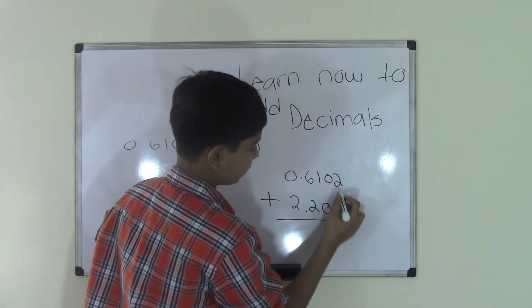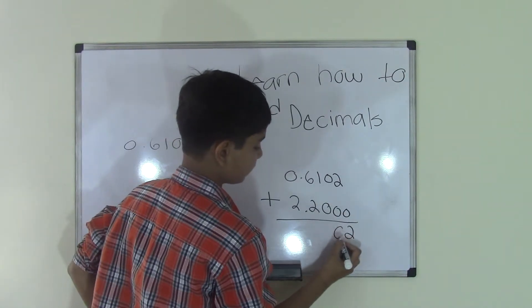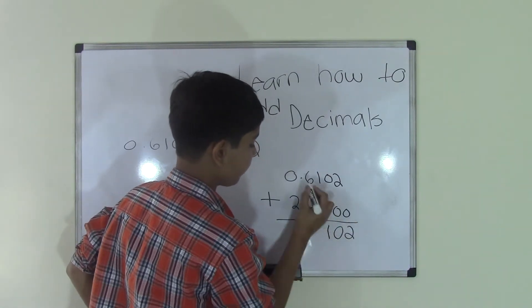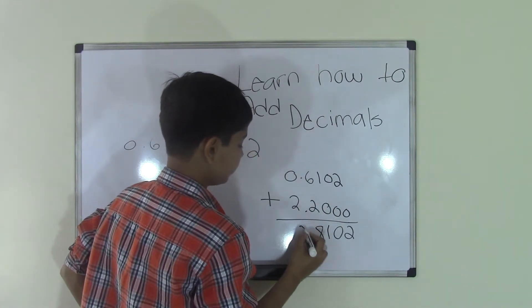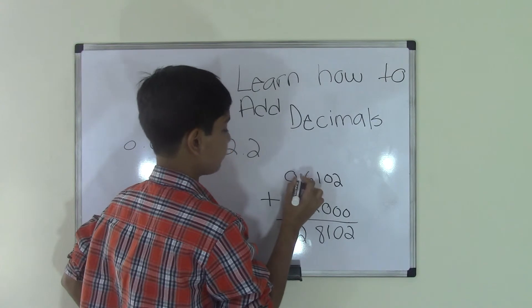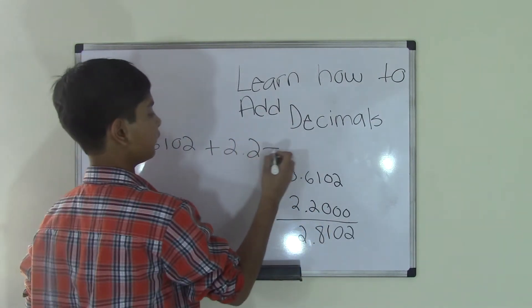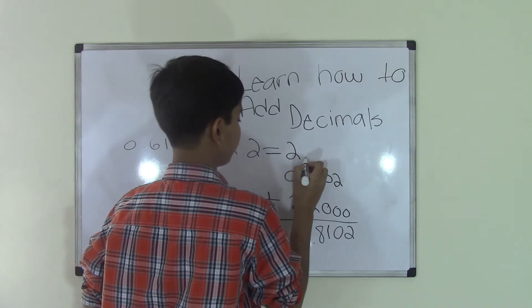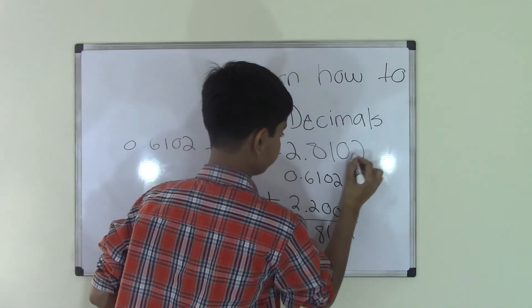And now we go ahead and add. 0 plus 0 is 0, 1 plus 0 is 1, 6 plus 2 is 8, 0 plus 2 is 2. And then now we just bring the decimal point straight down. So we get a sum of 2.8102.